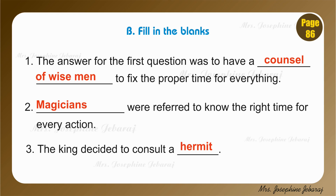Number 3. The king decided to consult a blank. After hearing all the answers of the learned men, the king was not satisfied. So he decided to consult a wise hermit. So the answer is: a hermit.